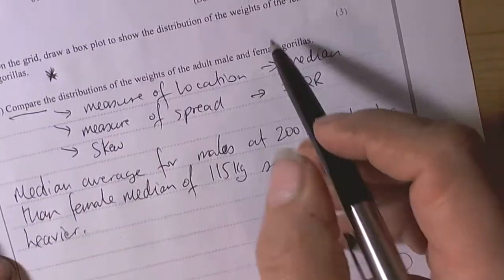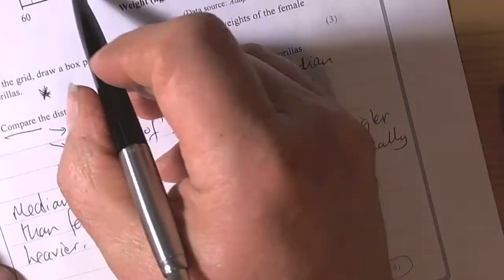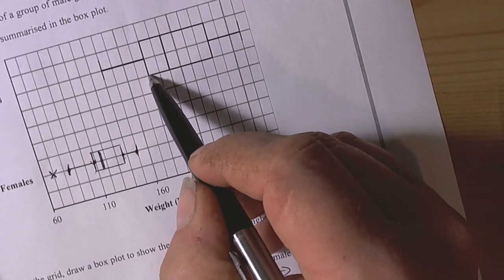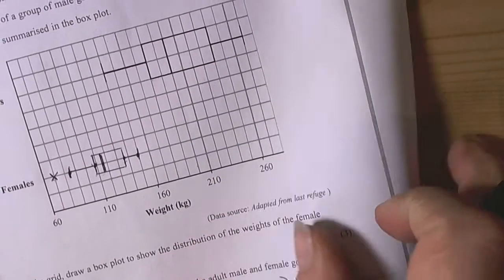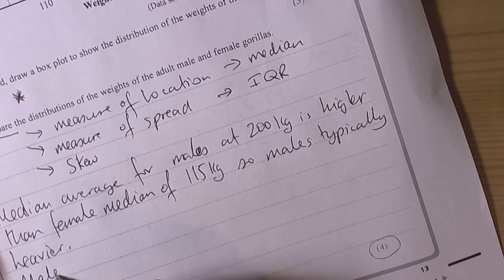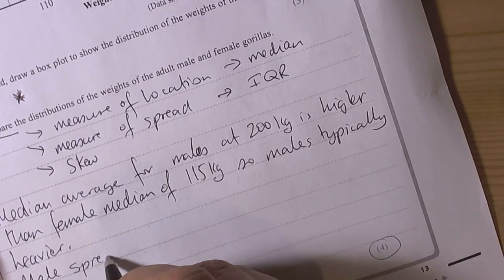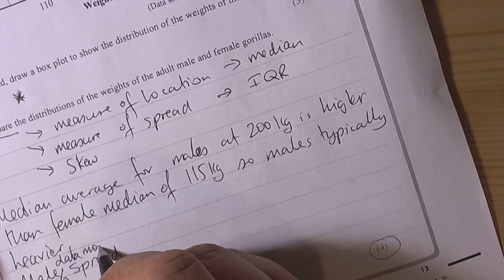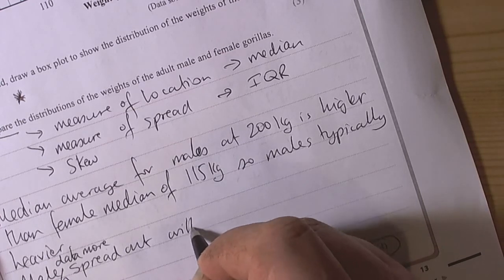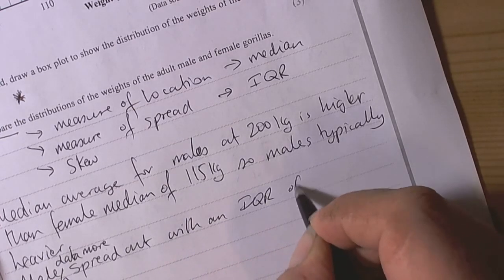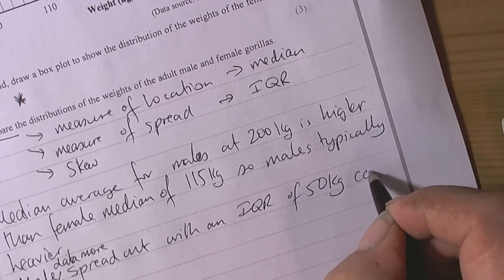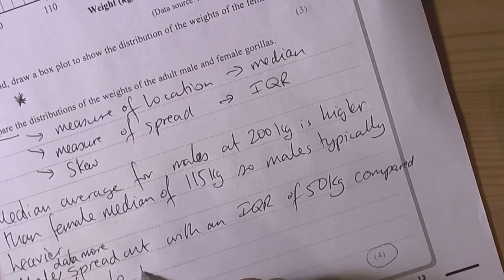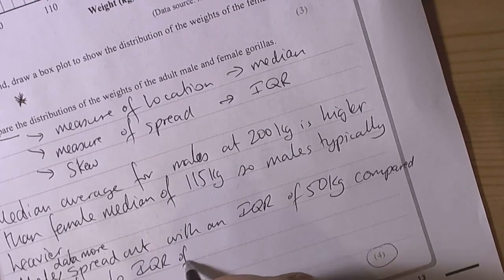For spread interquartile range, well we calculated the interquartile range for the females was 17. So we calculated the distance there was 17. For the males it's going 10, 20, 30, 40, 50, 60. So male data more spread out with an IQR of 50 kilograms compared to the female IQR of 17 kilograms.